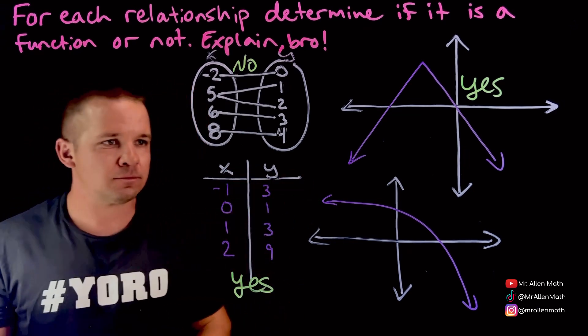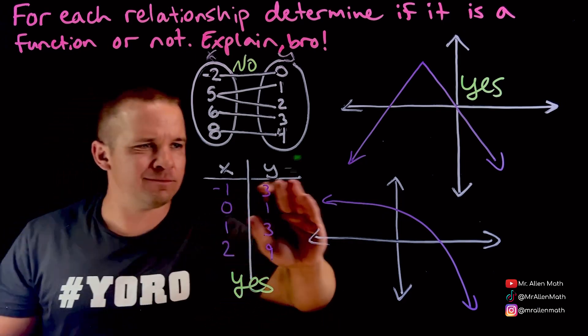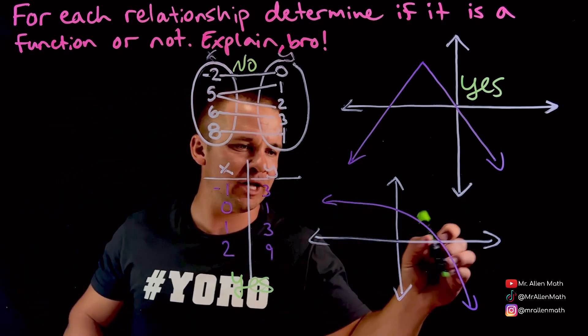Next one here. This looks like kind of like an exponential reflected down, right? And again here, I'm passing my vertical line test. So yes, this is going to be a function.